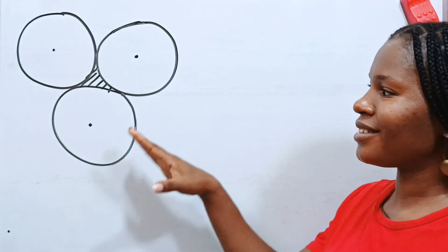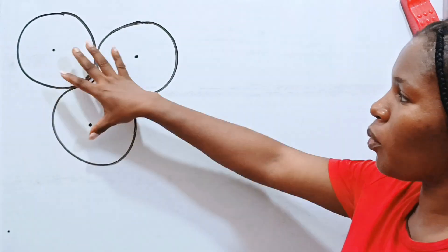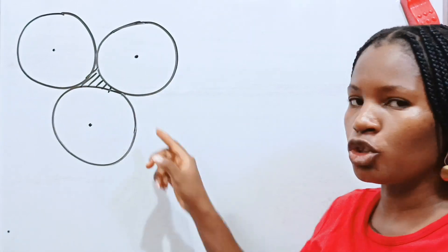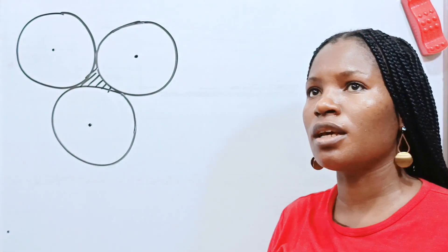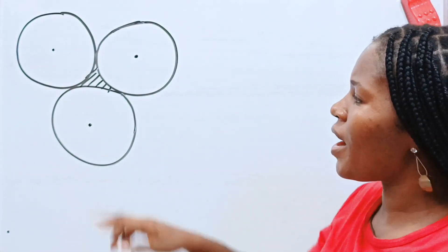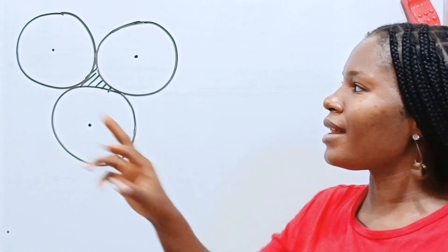I know what you are thinking — this is poorly drawn. Please pardon me, I don't really have the equipment I'm supposed to use to draw this neatly. Now, we are asked to find the area of the shaded portion.